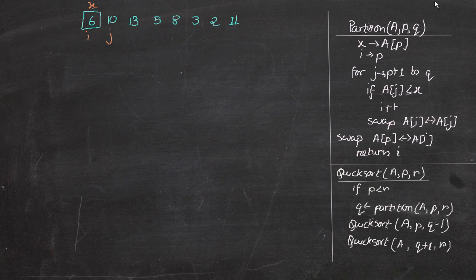Today we're going to be doing our first sorting algorithm: the Quick Sort algorithm. Quick Sort is a very efficient sorting algorithm and it's an in-place algorithm, like Selection Sort and Insertion Sort. It has a divide and conquer approach. It divides the problem into two sub-problems and then recursively tries to go back to its base case, solving the problem using the partition method.